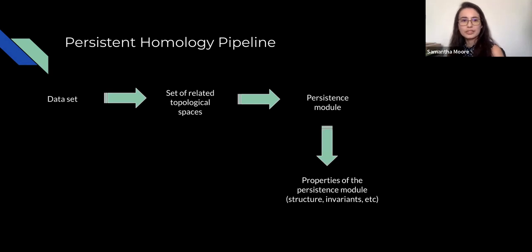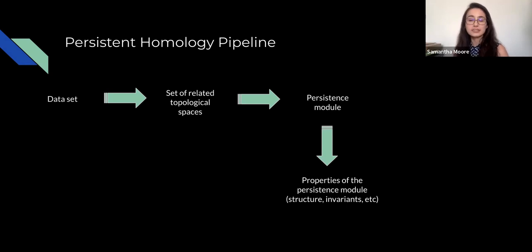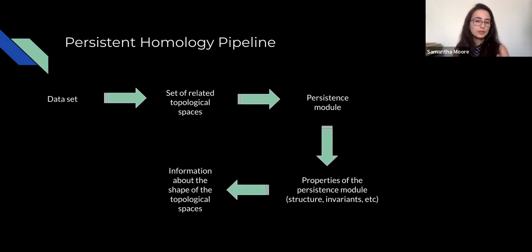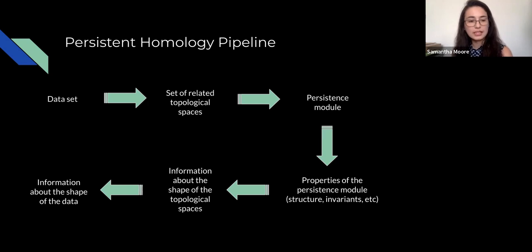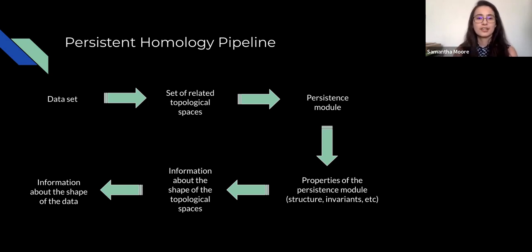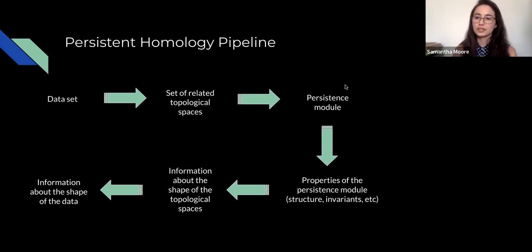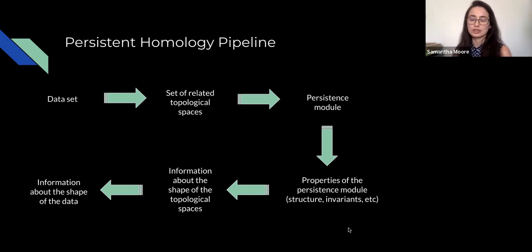We can study the properties of the persistence module — its structure, its invariants — and pull that information back to learn about the shape of the topological spaces, and further back to get information about the shape of the data itself. This is the full persistent homology pipeline. My work primarily focuses on studying the invariants of persistence modules.